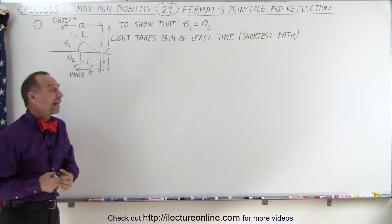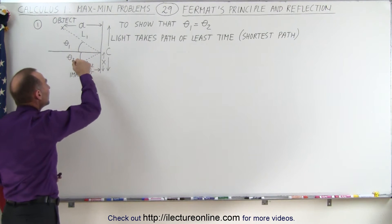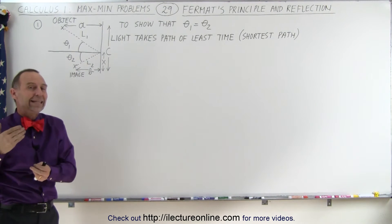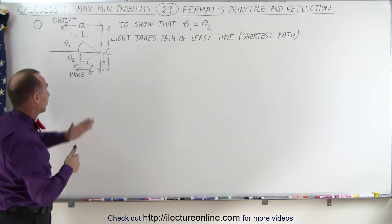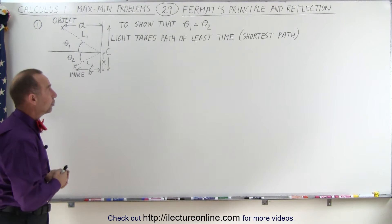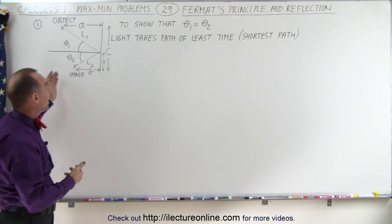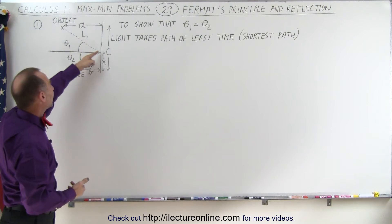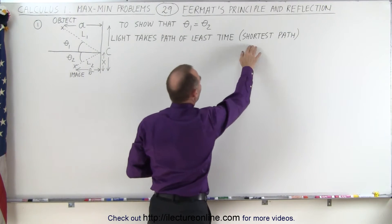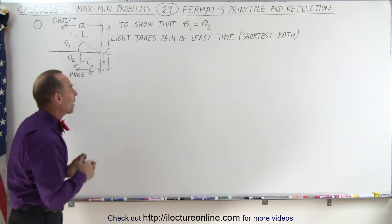The implication of that is that these angles, theta 1 and theta 2, will be equal. In other words, the angle of incidence and the angle of reflection when something is reflected off a flat mirror, those two angles should be equal to one another. We can show this by demonstrating that light will take the least time to get there, which means it will take the shortest path, and from that we should be able to show that those two angles are equal.